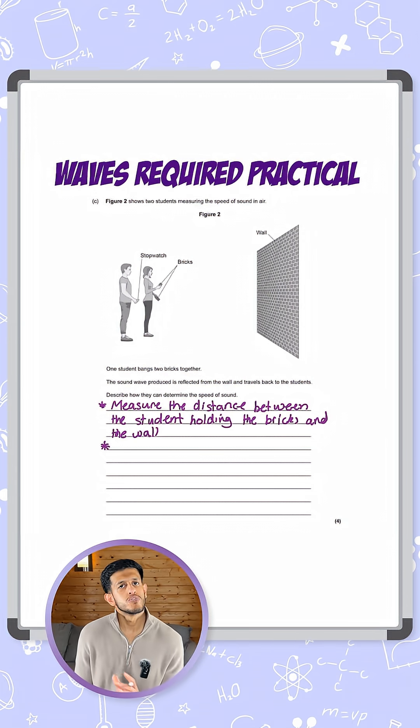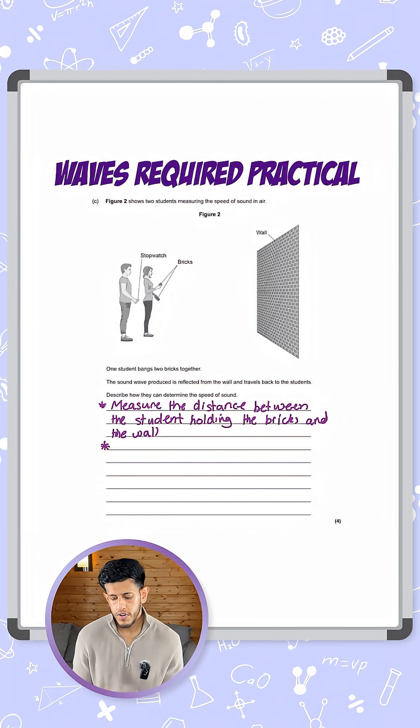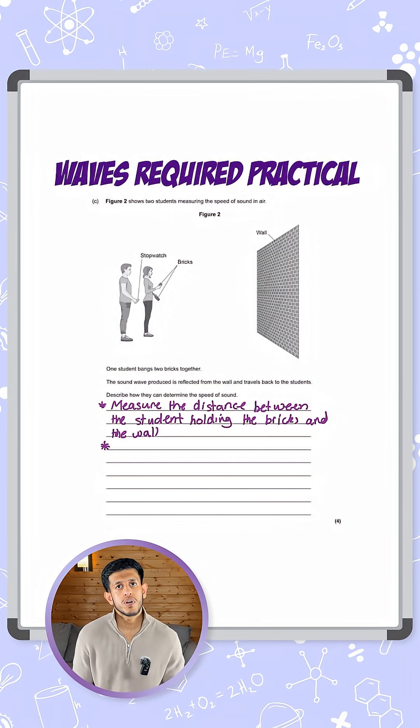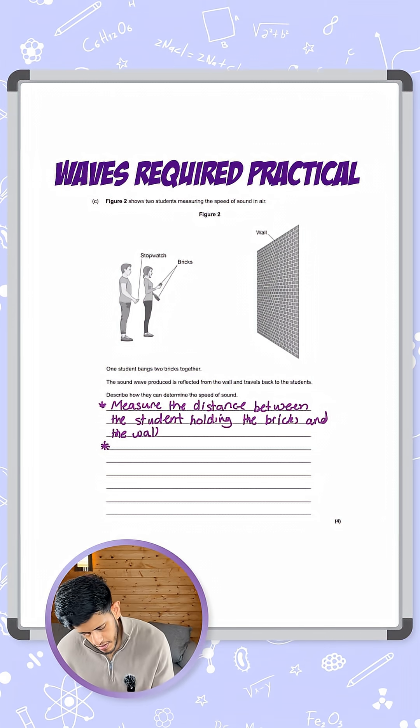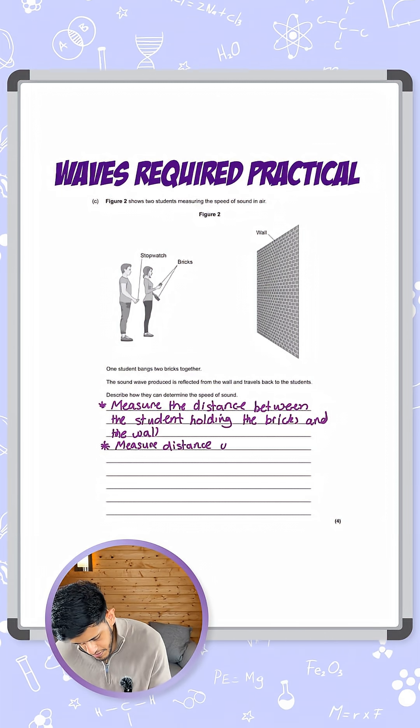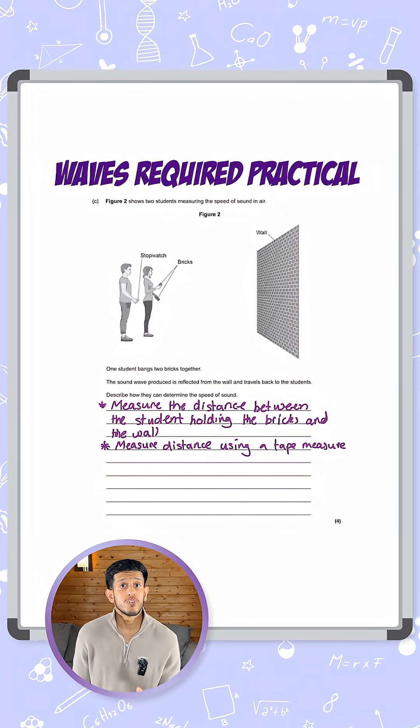Now we're talking about what we're measuring, we need to talk about how we're going to measure it. You can use one of two things: either use what's called a trundle wheel that moves along like a wheel on the ground, or you can use a tape measure. So I'm going to say measure the distance using a tape measure.